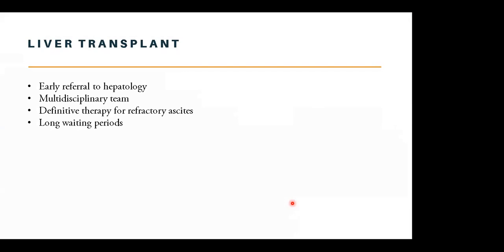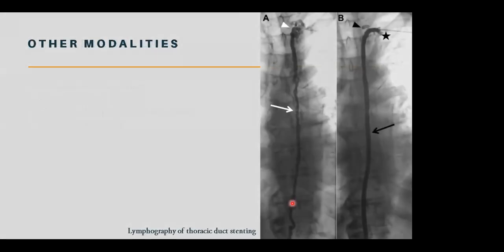Liver transplantation provides definitive therapy for patients with refractory ascites. We recommend early referral to hepatology for patients to be considered for liver transplantation. It is a multidisciplinary team process involving thorough assessment — respiratory, cardiology, psychosocial — and the team includes surgeons, anesthetists, social workers, psychologists, psychiatrists, and hepatologists. However, the waiting period is long.